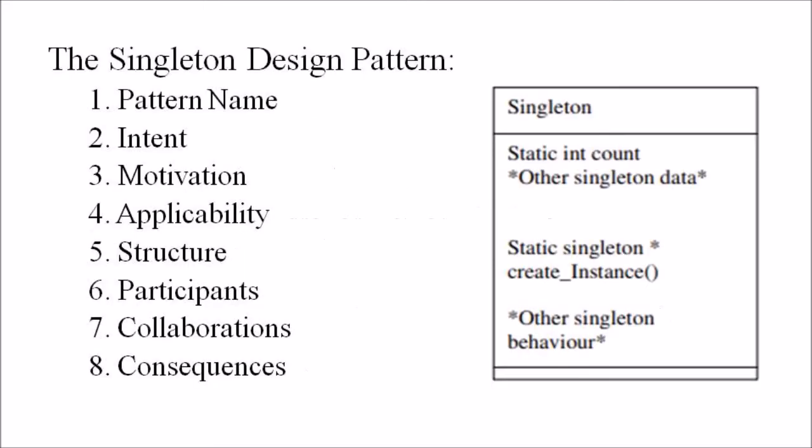When it comes to the structure of a design pattern, let us consider the singleton design pattern. It has the following structure. First, it has a pattern name — here we name it 'Singleton.' Second, it has intent: to ensure a class has only one instance and a global point of access to it. Third, it has motivation — in software development, having more than one object of a class alive can make the system ambiguous. Fourth, we have applicability: the singleton can be used where there must be exactly one object and it must be accessible to multiple clients or objects.